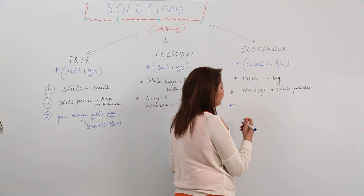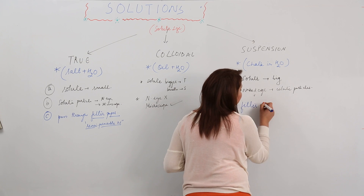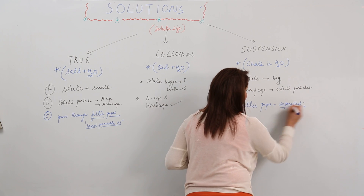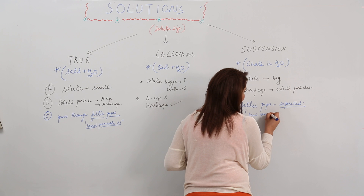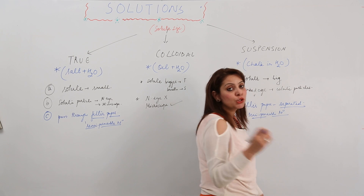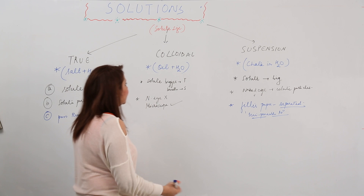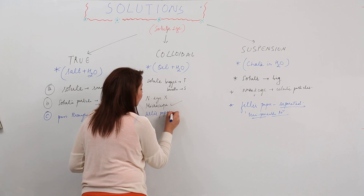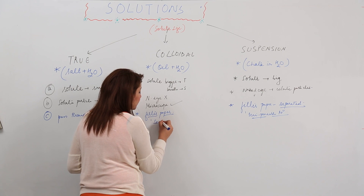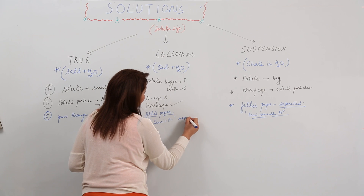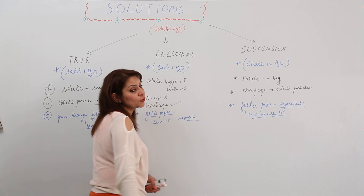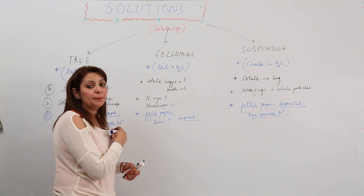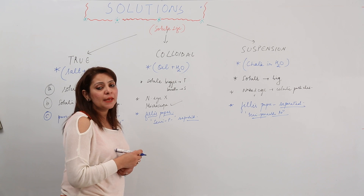For suspension, when we pass it through filter paper, the solute particles are stopped and get separated, because the particle size is too big. For colloids, they pass through filter paper — they are not separated by it — but when we use a semi-permeable membrane, the solute particles are stopped and do not pass through. So colloids can pass through filter paper pores but cannot pass through the pores of a semi-permeable membrane.